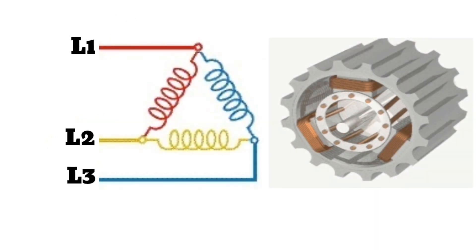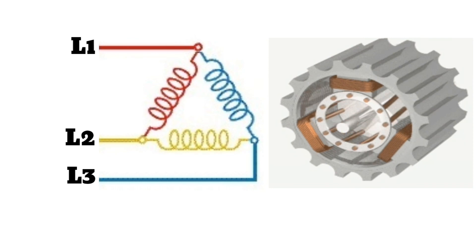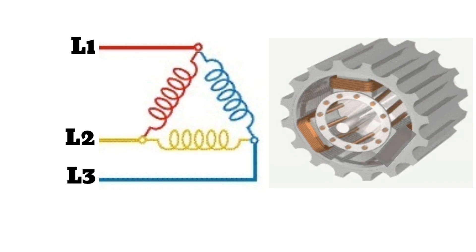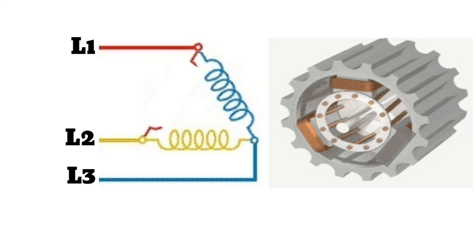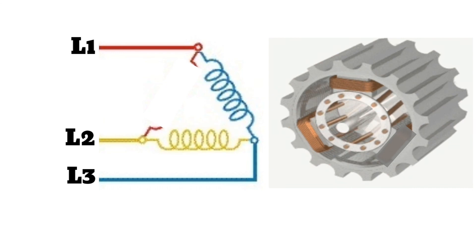The advantage of the delta connection is higher reliability. If one of the three primary windings fails, the secondary will still produce full voltage on all three phases, provided the remaining two phases are able to carry the load.